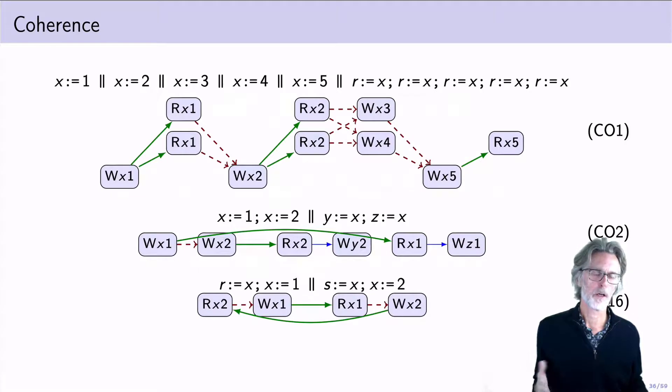The coherence requirements in this model are stronger than those of Java in order to get local data-race-free reasoning. And weaker than those of C++ in order to get common sub-expression elimination.